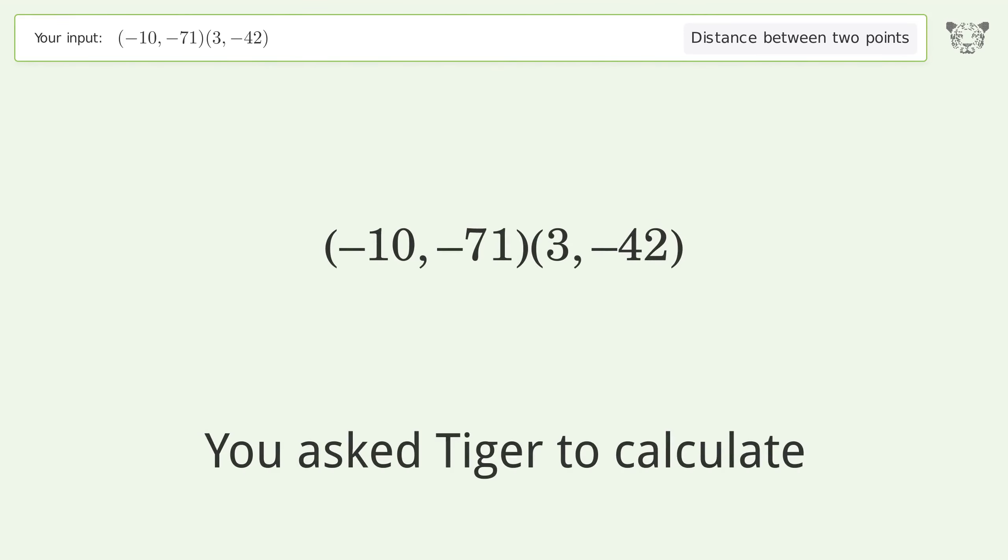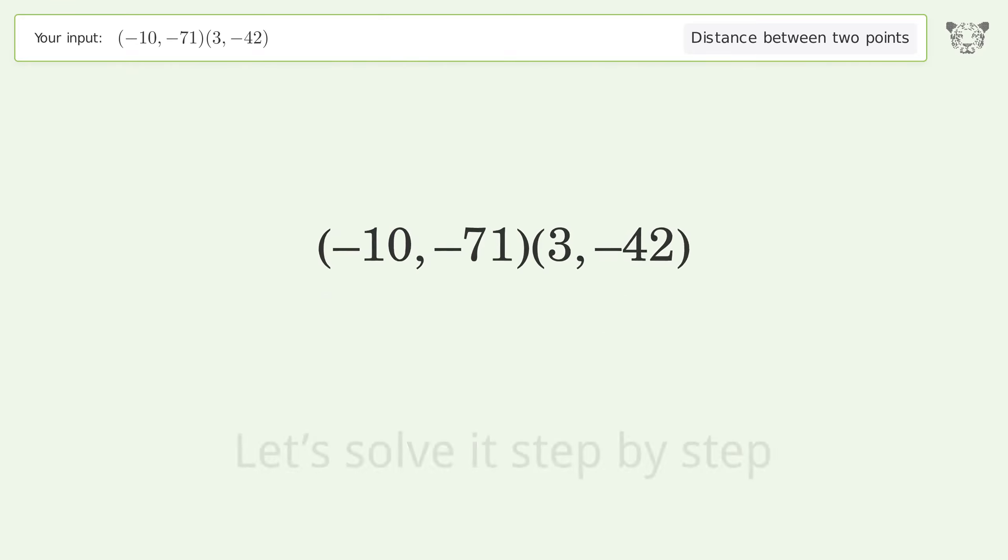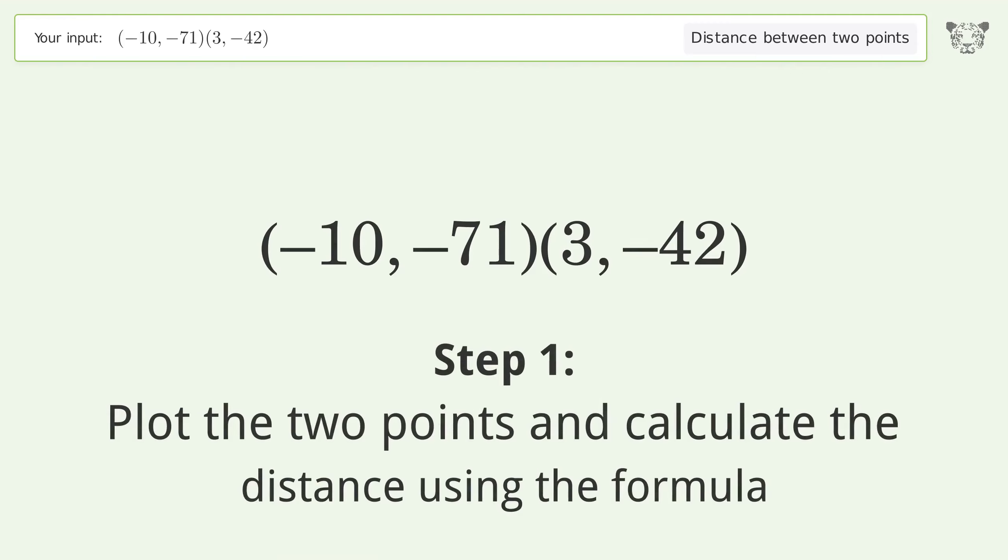You asked Tiger to calculate the distance between two points. The distance is the square root of 1010, or 31.78. Let's solve it step by step by plotting the two points.